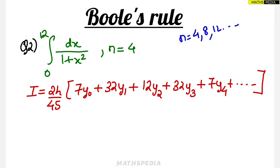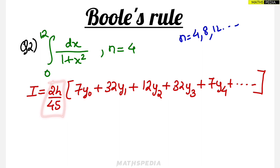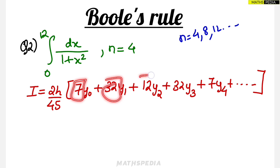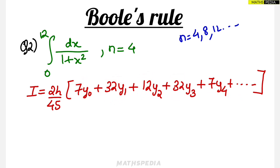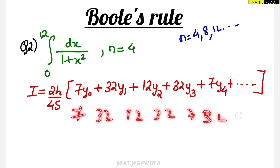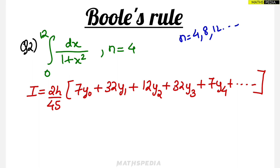The formula is the most important thing to remember. The definite integral I is equal to 2h/45 multiplied by the y-values with coefficients: 7, 32, 12, 32, 7, 32, 12, 32 and so on. The pattern to remember is 7, 32, 12, 32, 7, 32, 12, 32 — keep repeating this pattern.